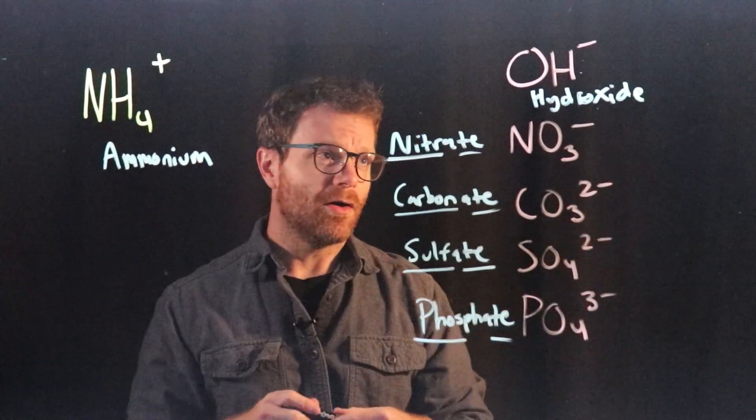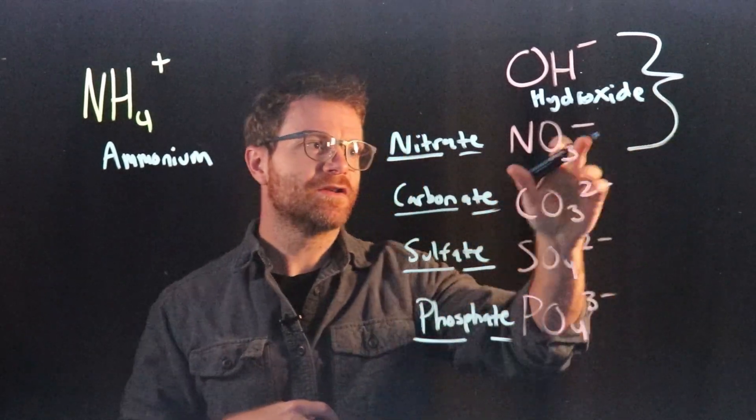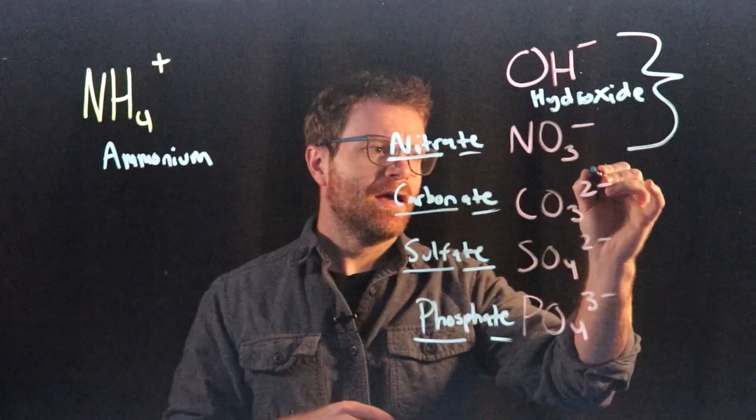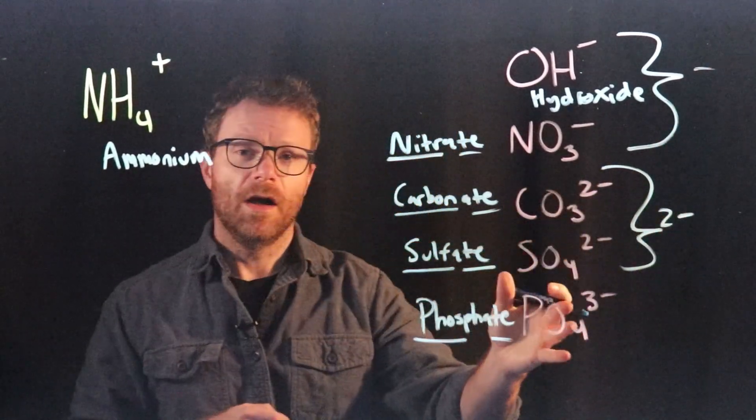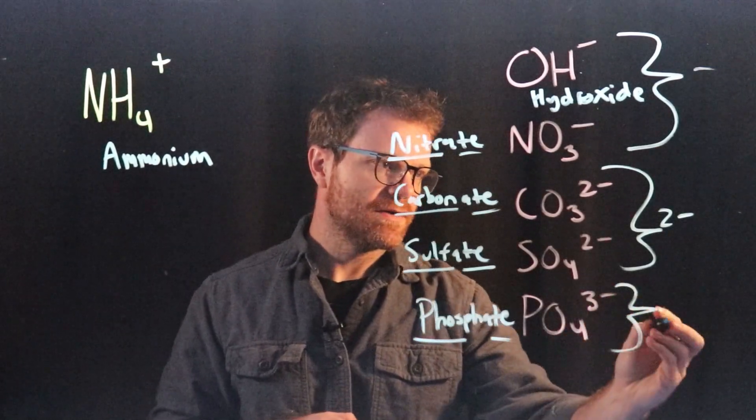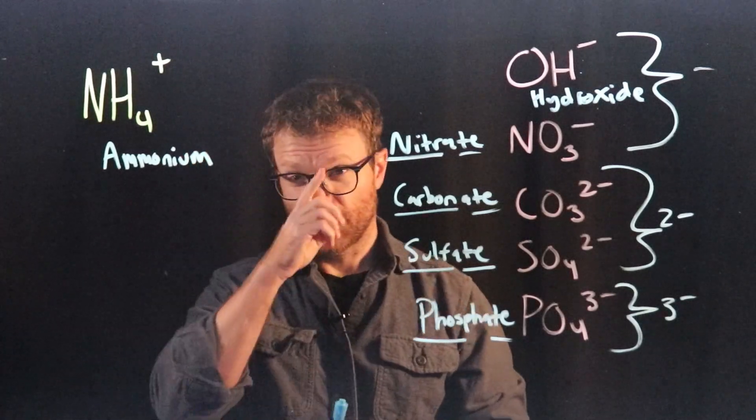These charges you'll notice are all different. So these first two up here, hydroxide and nitrate, all have a minus one charge just written out as a negative sign. The next two have a negative two charge written out as two minus. And then the last one, phosphate, just has a minus three charge written out as a three minus.